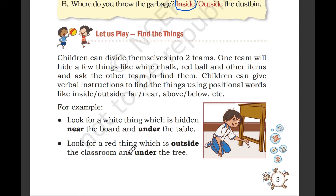You have to specify the color of the object. Positional words include: under, near, on, above, far, inside, outside.